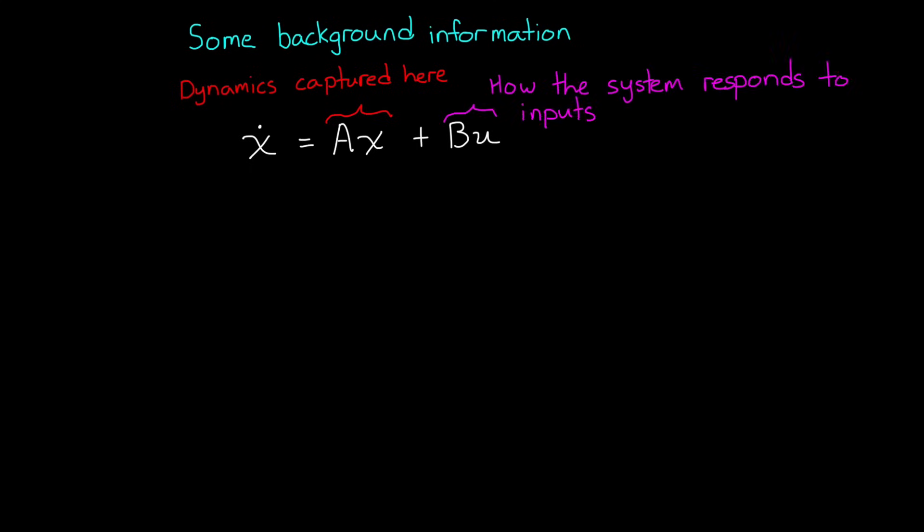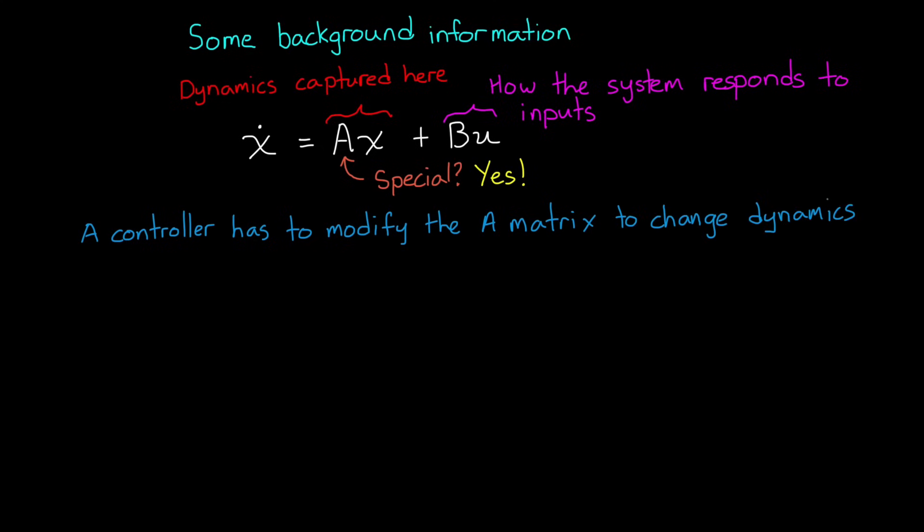The second part is how the system responds to inputs, but how the energy in the system is stored and moves is captured by the Ax term. So, you might expect that there is something special about the A matrix when it comes to controller design. And there is. Any feedback controller has to modify the A matrix in order to change the dynamics of the system. And this is especially true when it comes to stability.